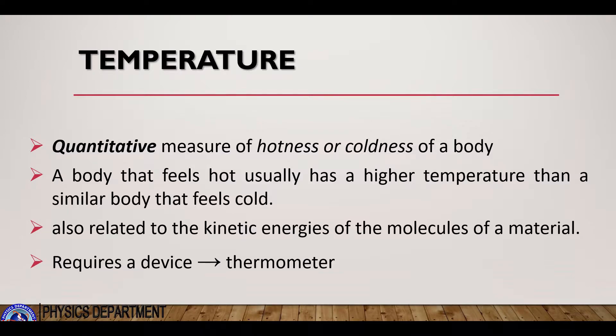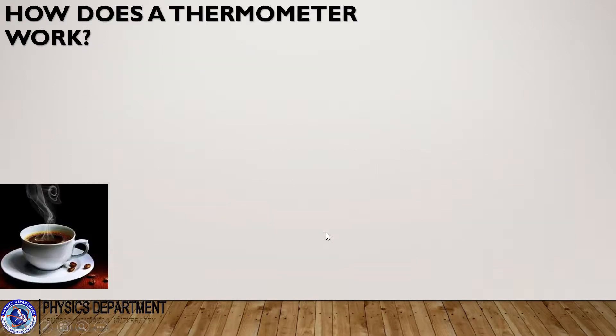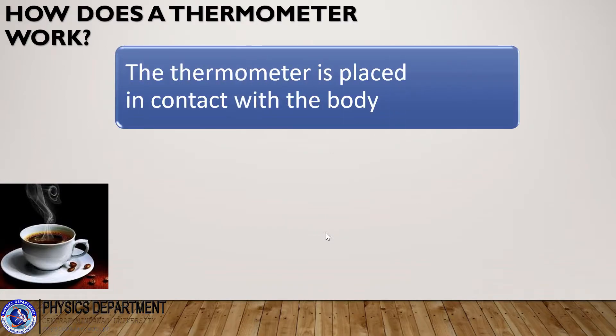Temperature requires a device. To measure temperature, we will use a thermometer. So, how does a thermometer work? To measure the temperature of a body, we place the thermometer in contact with the body. For example, if you want to know the temperature of a cup of hot coffee, you just stick the thermometer in the coffee.